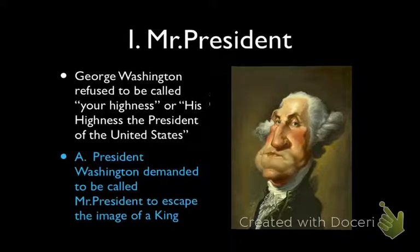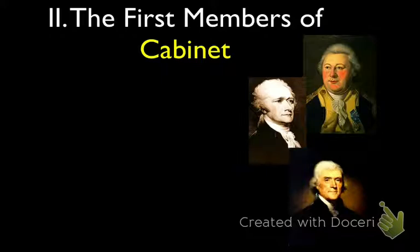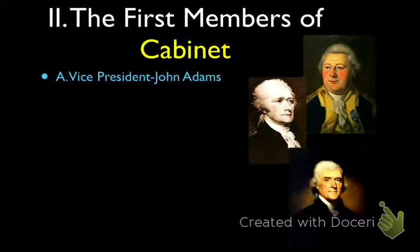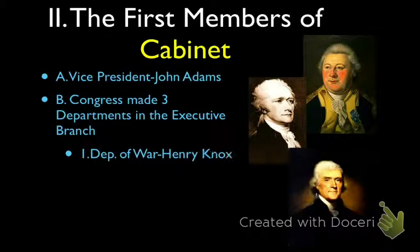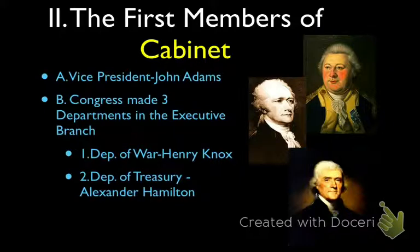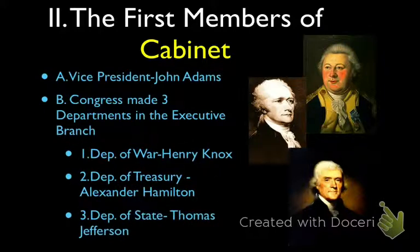George Washington needs help running this country — one person can't run all those states. So Washington is going to create the first cabinet. John Adams is going to be his vice president, having come in second place in the presidential race. Congress is also going to create more departments — three major ones. The first is the Department of War, led by Henry Knox, a buddy of George Washington from the Revolutionary War. The second is the Department of Treasury, led by Alexander Hamilton. The third is the Department of State, led by Thomas Jefferson — TJ, who wrote the Declaration of Independence. His job is to work with foreign countries and have major input on foreign affairs.